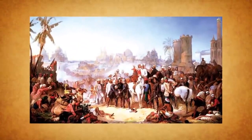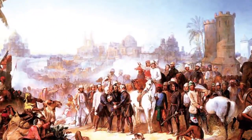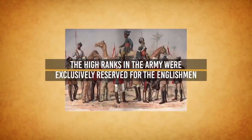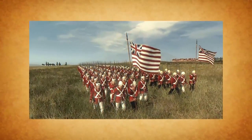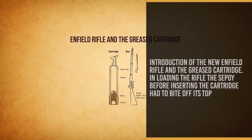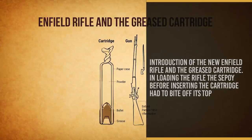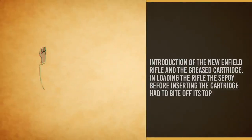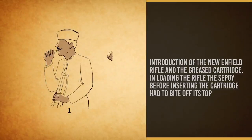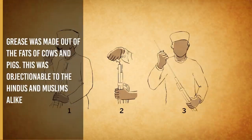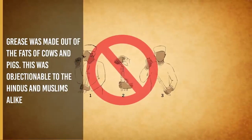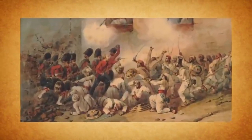Military Causes: The Indian soldiers were considered inferior and were ill-treated by high officers. The high ranks in the army were exclusively reserved for Englishmen and Indians were deliberately excluded from responsible positions. The immediate cause of the revolt was the introduction of the new Enfield rifle and the greased cartridge. In loading the rifle, the Sepoy had to bite off the top of the cartridge. It was believed that the grease was made from the fat of cows and pigs, which was objectionable to Hindus and Muslims alike. This rumour sparked a fire of discontent against the British in the form of revolt.